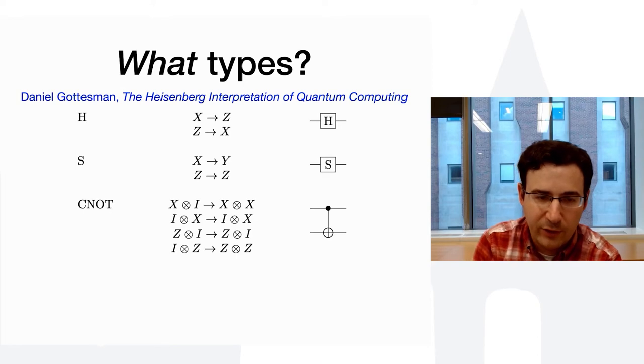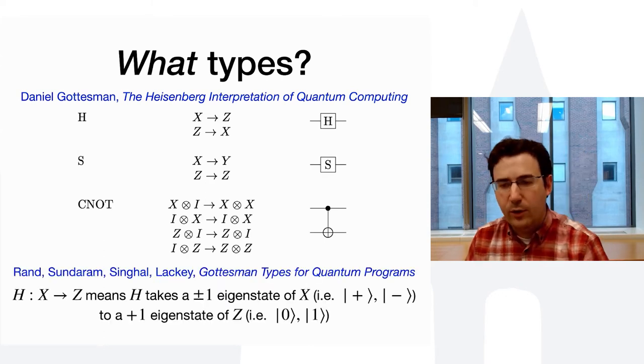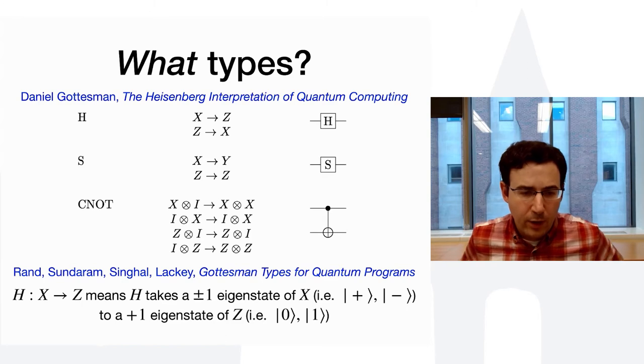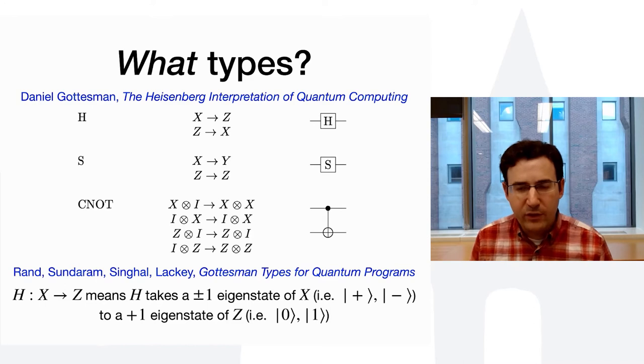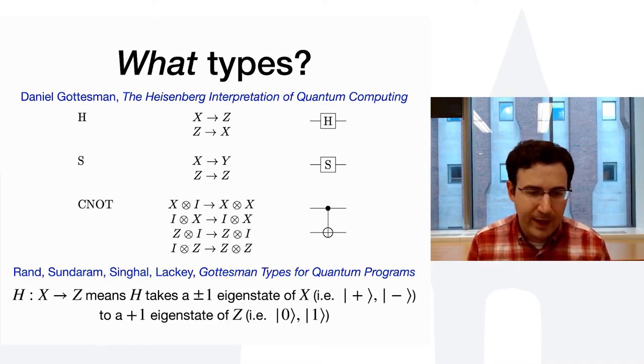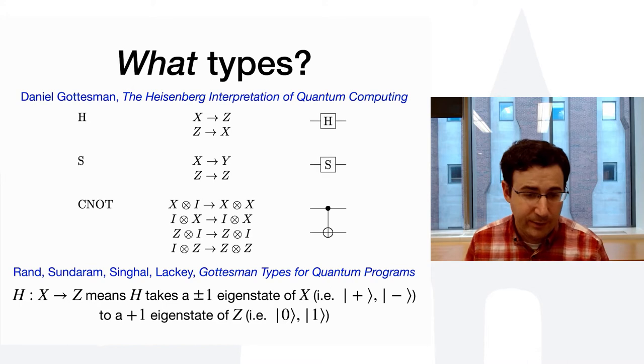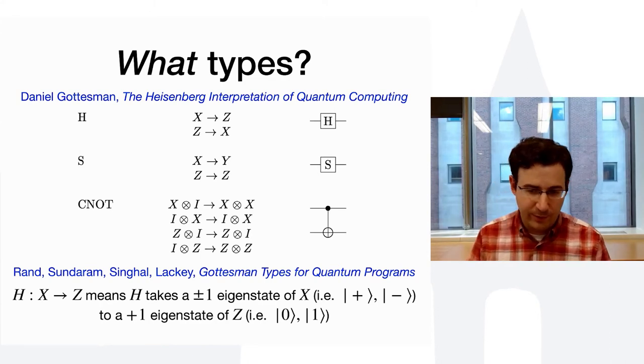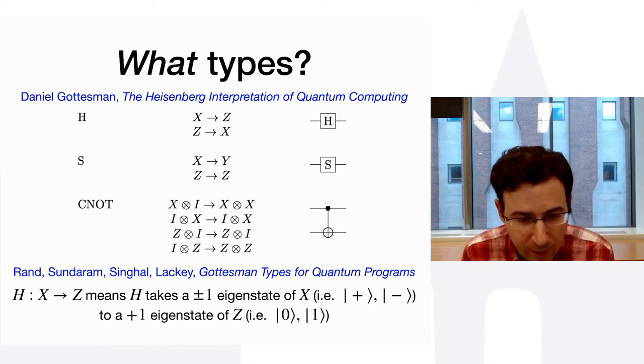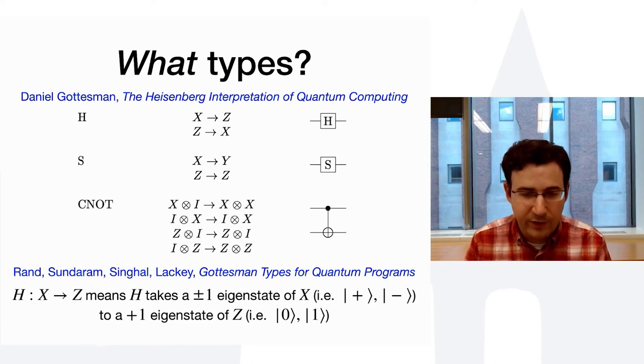In other words, it has a characterization of H, S, and CNOT, all of which look very much to me like their types. And in a QPL paper last year, we decided that we would create a type system out of this. And we gave this a very simple semantics. So, if H has the type X to Z, then that means that H takes a plus or minus one eigenstate, or eigenvector of X, which is the plus or minus state, to a plus or minus one eigenstate of Z, which are your computational basis states, 0 and 1.